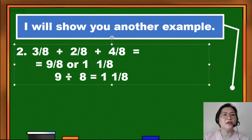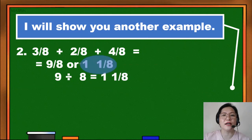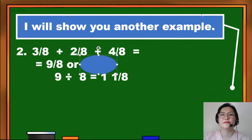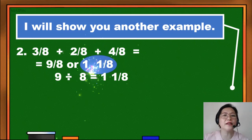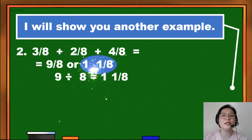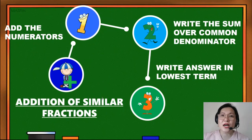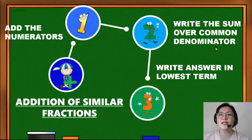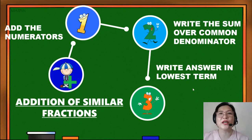You have to put a circle on your answer to show that it is the final answer. 3/8 plus 2/8 plus 4/8 equals 1 and 1/8. That's how to add similar fractions — just follow the steps: add the numerators, write the sum over the common denominator, and write the answer in lowest term. I'm sure you can now proceed to the activities and learning tasks in the module and the activity sheets. Good luck!